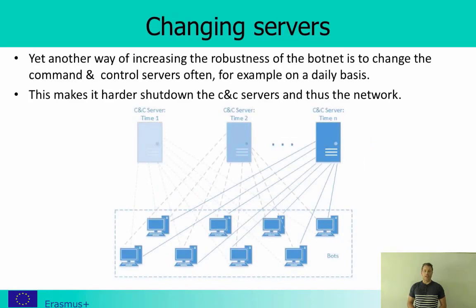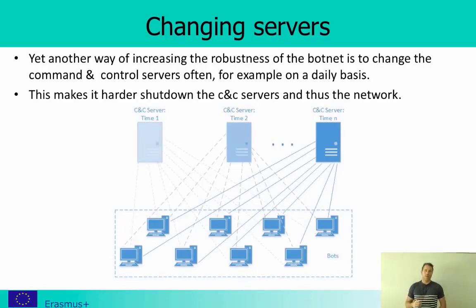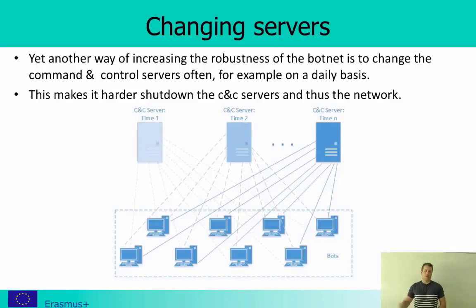Another model uses changing servers, which greatly increases robustness. You might have one server one minute, switch to another the next minute, and another after that — always changing the servers you communicate with. This is a more difficult architecture to implement, but makes it much harder to shut down the servers. Combining this with multiple servers placed in multiple countries simultaneously makes it very hard to shut down, since if one server goes down you can contact another in a different country or region.